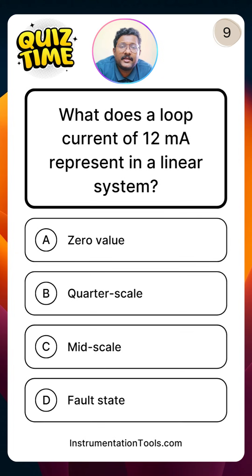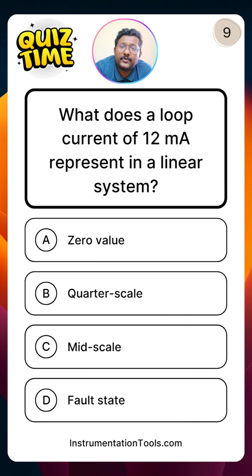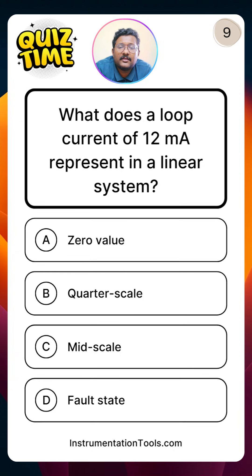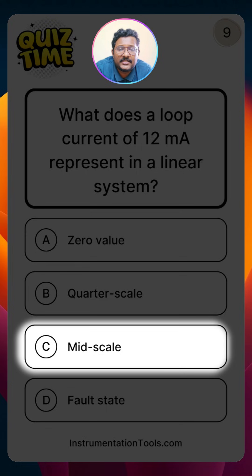What does a loop current of 12 milliampere represent in a linear system? Assuming the standard 4 to 20 milliampere signal range, 12 milliampere is the 50% point of the signal. In the range of 4 to 20 milliampere, 12 milliampere represents 50% of the process variable — mid scale — which is option C, 50% of the scale of the measurement.